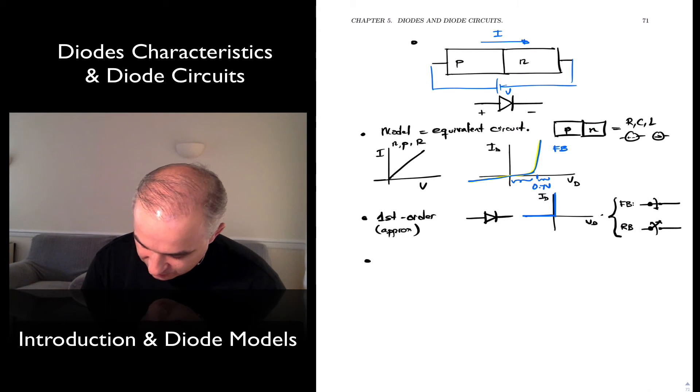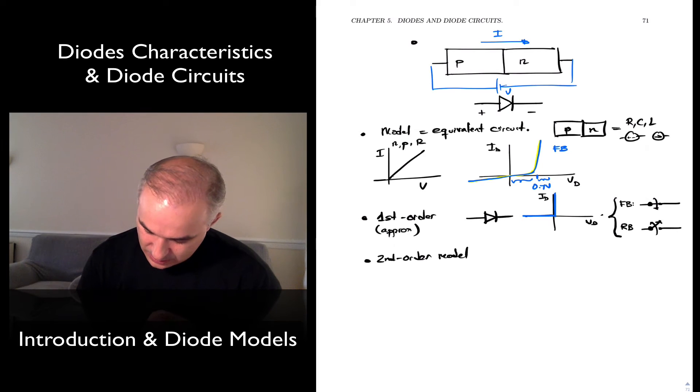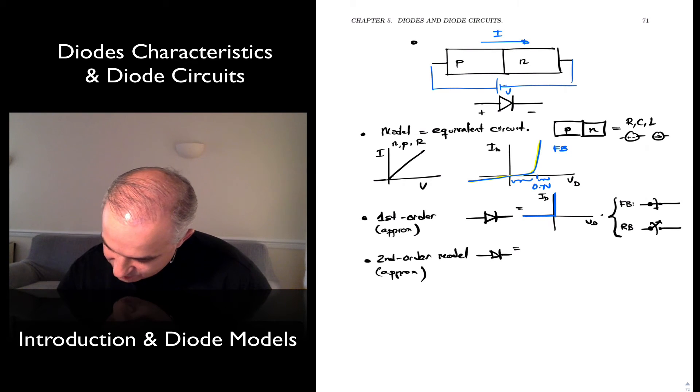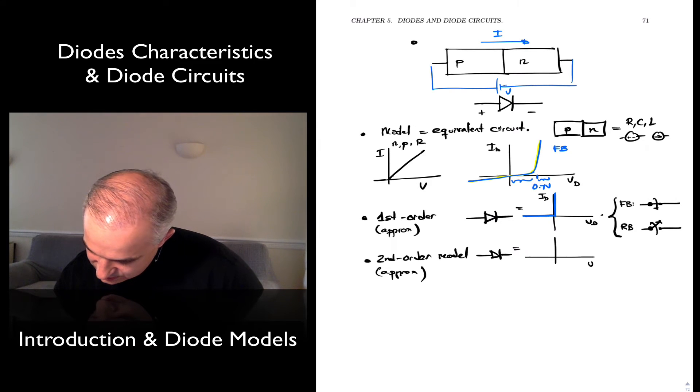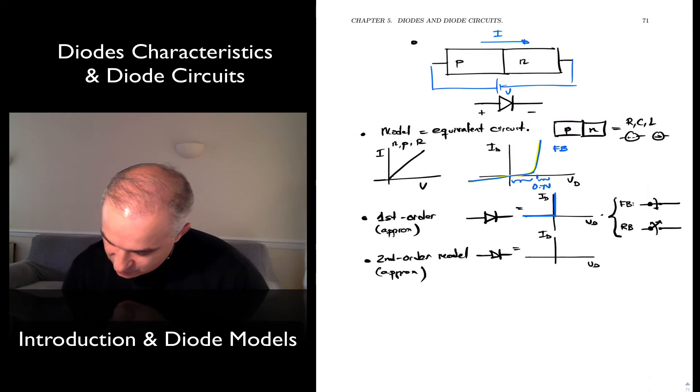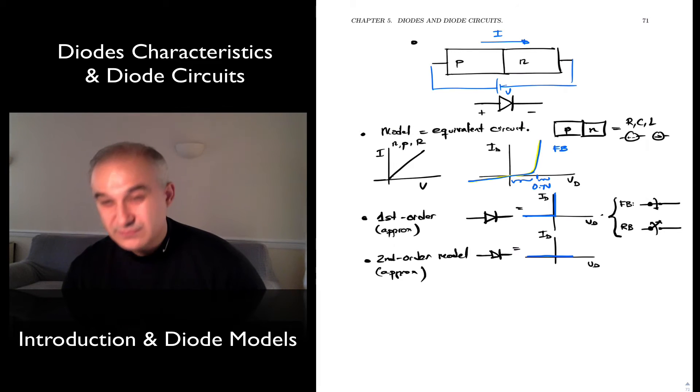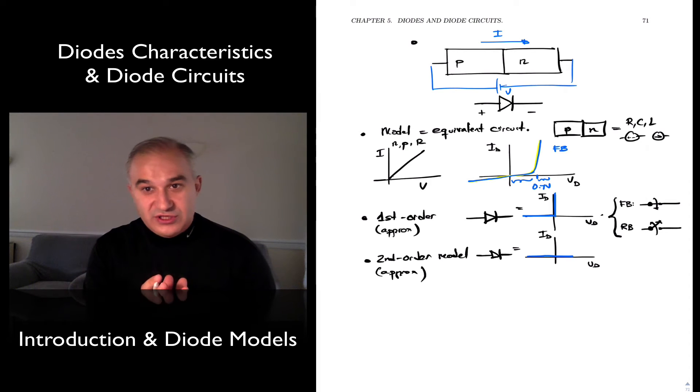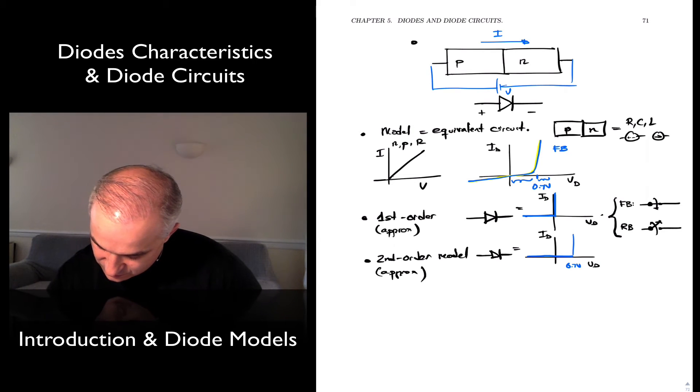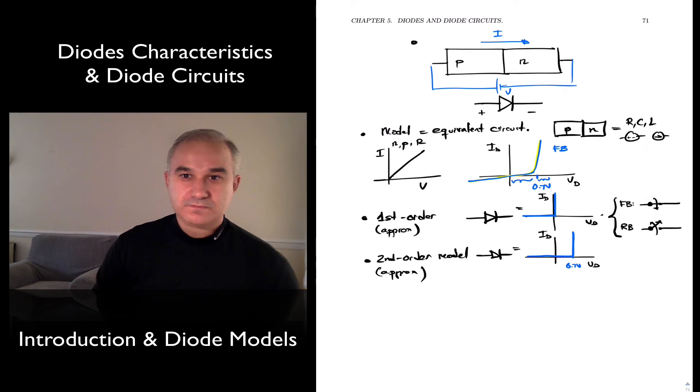So let's do a more accurate model, a second-order model. Again, that's an approximation. In this case, we could say our diode has a current-voltage characteristic where for reverse voltages still, we get no current. And even for forward bias low voltages, we get no current. But if the voltage is more than 0.7 volts, then we get current, and it is like a short circuit.